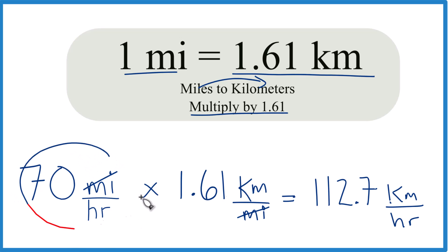That's it. This is Dr. B converting 70 MPH to kilometers per hour. The answer, 112.7 kilometers per hour. Thanks for watching.